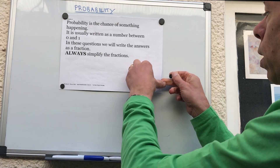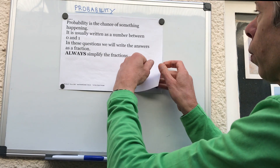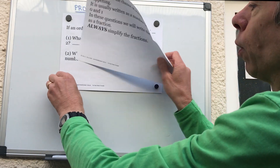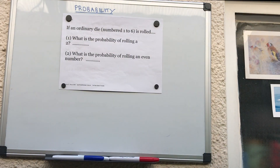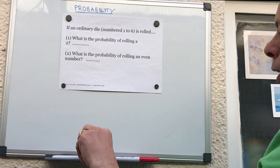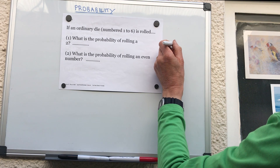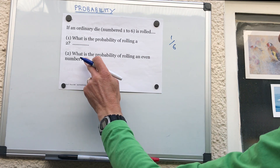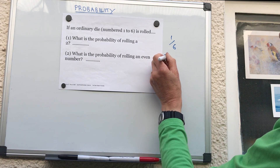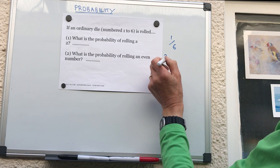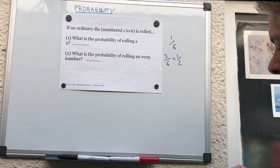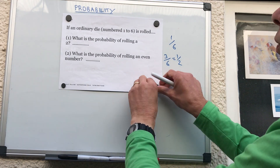Let's look at the first question. The probability of rolling a two — there are six numbers altogether, there's only one two, so it's one out of six. The probability of rolling an even number — there are three even numbers and six numbers altogether, so three sixths, which simplifies to a half.